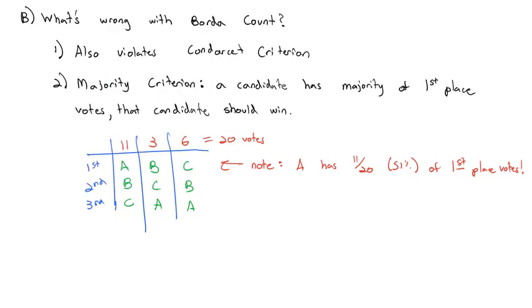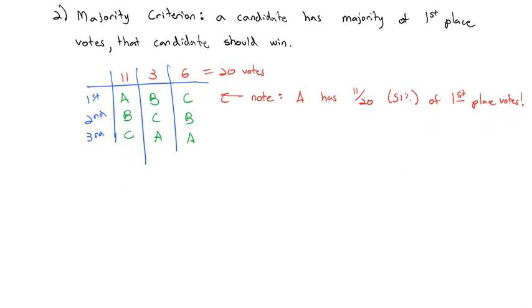However, if we do the math here, A is in first place, giving it 3 points times the 11 votes, plus third place, giving it 1 point times the 3 votes, plus third place, giving it 1 point times the 6 votes, which means we have a total of 42 points for A.